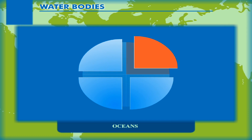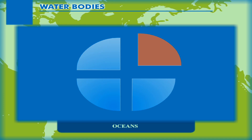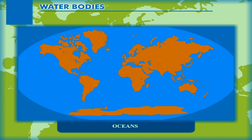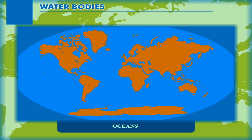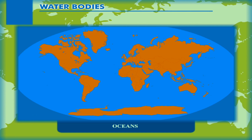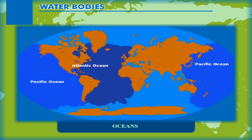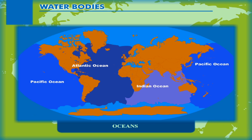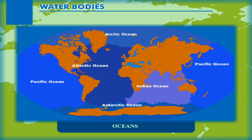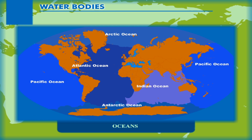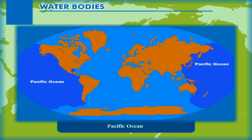About three-fourths of the earth's surface is covered by water. Oceans are large bodies of salty water. The five oceans of the world, in order of their sizes, are the Pacific Ocean, the Atlantic Ocean, the Indian Ocean, the Arctic Ocean, and the Antarctic Ocean, also called the Southern Ocean.